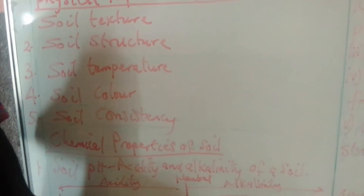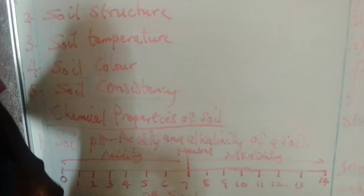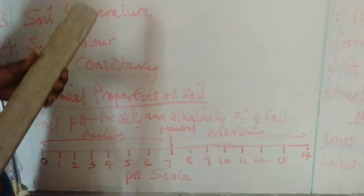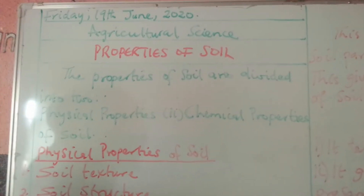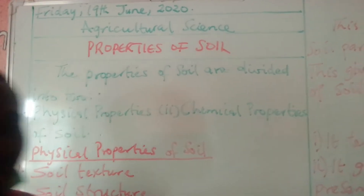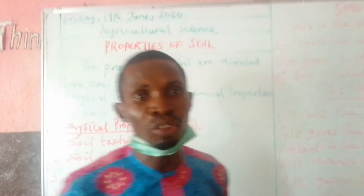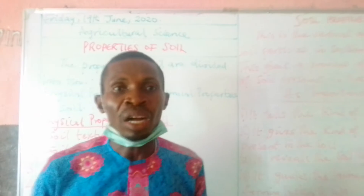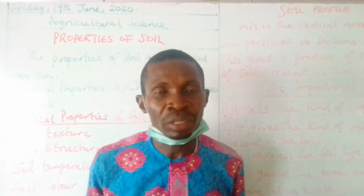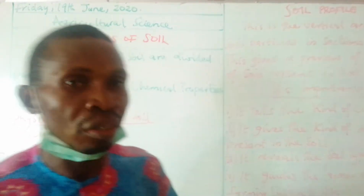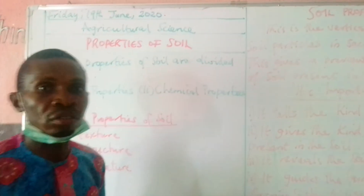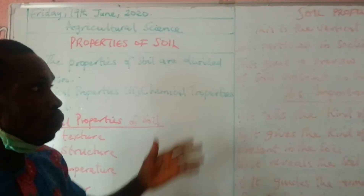Good afternoon students, we are back again in agricultural science class. We have been dealing with soil. In the last lesson we treated what soil is and talked about the types of soil. Now I want to finalize this topic: properties of soil.